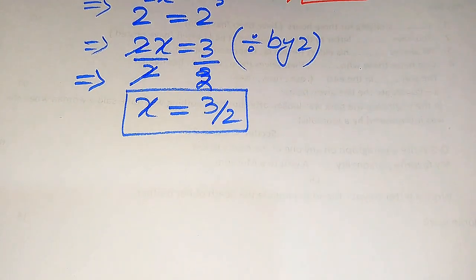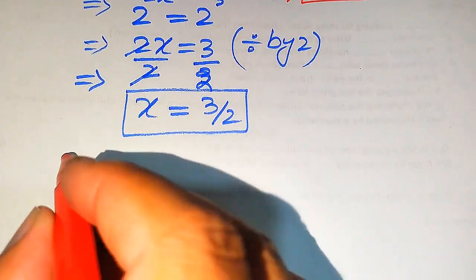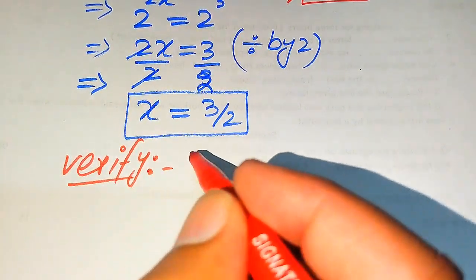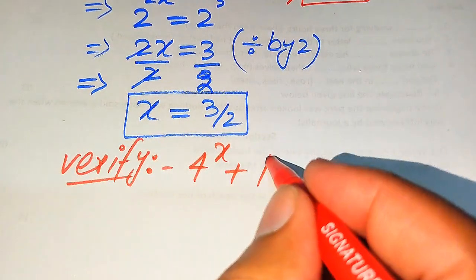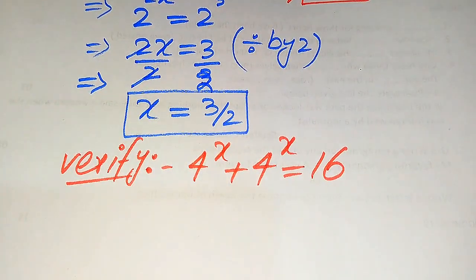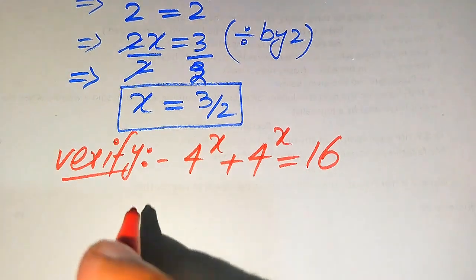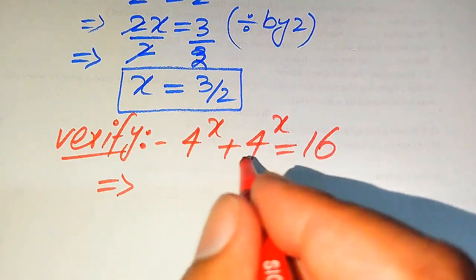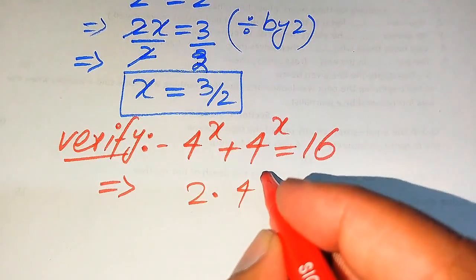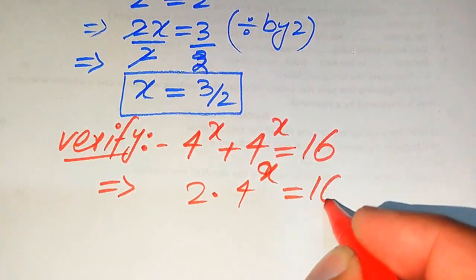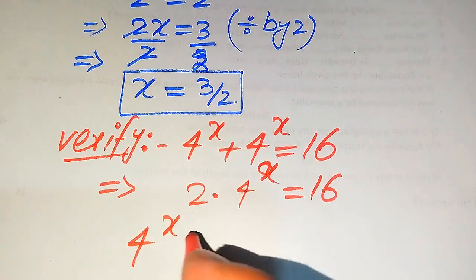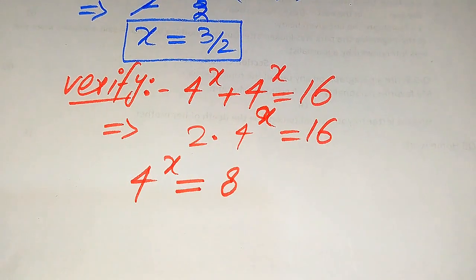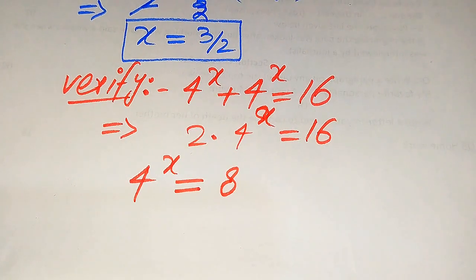Now we verify whether x equals 3/2 is a valid solution or an extraneous root. We copy down the original equation: 4 to the power of x plus 4 to the power of x equals 16. Simplifying, 4 to the power of x plus 4 to the power of x becomes 2 times 4 to the power of x equals 16. Dividing both sides by 2 gives 4 to the power of x equals 8.